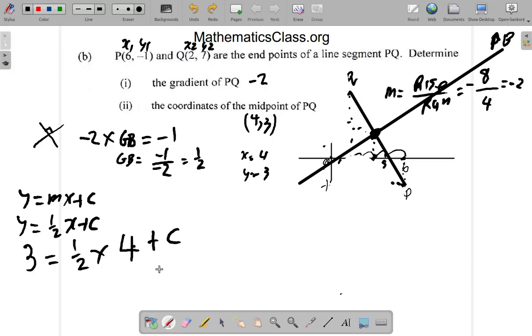So this is 3 is equal to 1/2 of 4 is what? 2 plus C. So subtract 2 from both sides. So you get 3 minus 2 is equal to 2 minus 2 plus C. Well, you wouldn't have to worry about the 2 anymore. That's gone. What is 3 minus 2? That's negative... That's 1. So C is equal to 1.